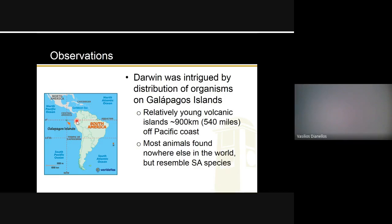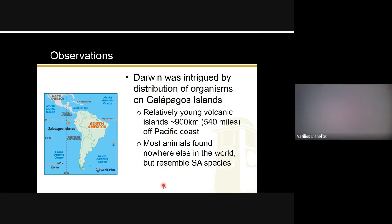Even though each little island is its own unique habitat, the species there resemble the ones in South America because they came from South America. You might have had a species perfectly suited for a rainforest, and it comes over to the Galapagos to a different environment. It still survives but it's not perfect for the new environment, and because of that over time it changed — it evolved to match its environment. But it originated from South America, so going back to the point about geographic proximity: even though it changed, that's where it originated.